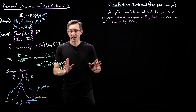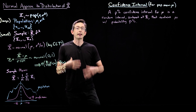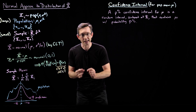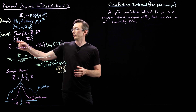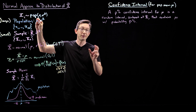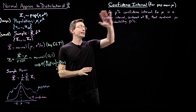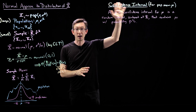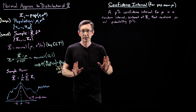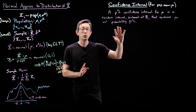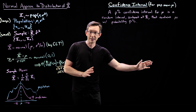We hinted in the last lecture that the fact that this sample mean is normally distributed can allow us to make very precise statistical statements about the likelihood of x-bar being within some value of our true population mean, mu. This is going to be codified in the notion of a confidence interval, and confidence intervals are ubiquitous in statistics. They're kind of the dual of the hypothesis test that we're going to introduce next.